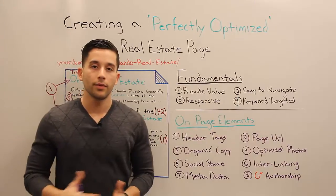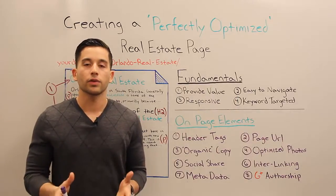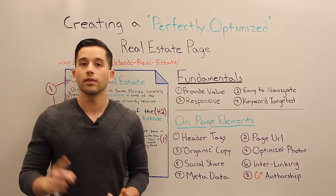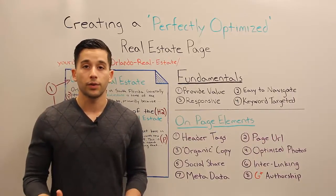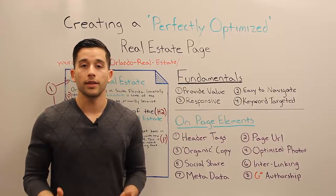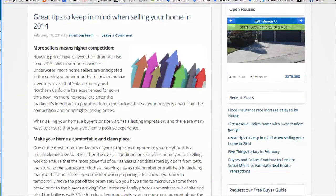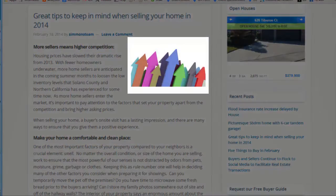Number two: easy to navigate. If we're talking about the website, you want to make sure that you have a clean menu, lots of white space, and very specific calls to action. If we're talking about the page or post, you want to make sure everything is neatly organized — use subheadings to break up the content, and if you've got images, make sure they're aligned left or right, not just thrown in there.